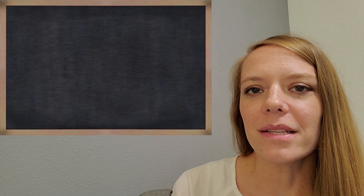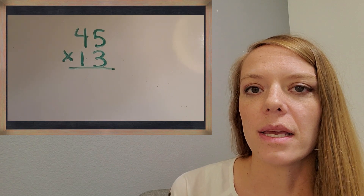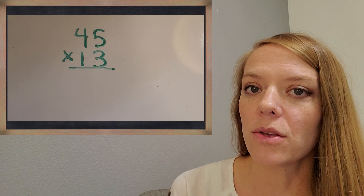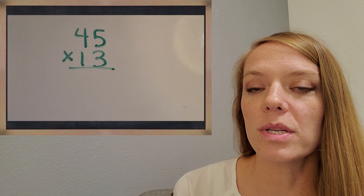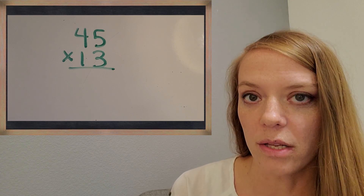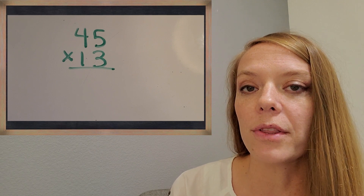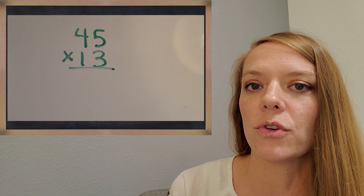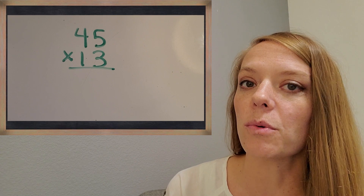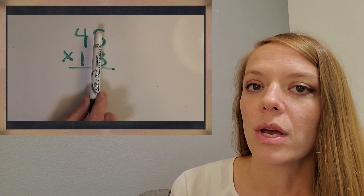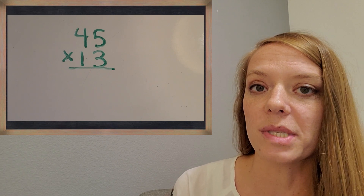Let's start with this problem: 45 times 13, and really dig into the algorithm and the steps that you can follow. Once you get these steps down, you're going to notice that this strategy is the fastest one, so it's kind of nice to learn. With the algorithm, we start just like you would if you were doing the addition or subtraction algorithm — you always want to start with your smallest place value. So we're going to start with five times three, those two numbers in the ones place.